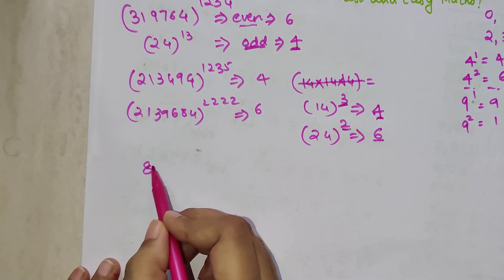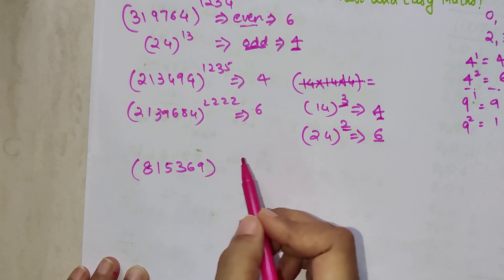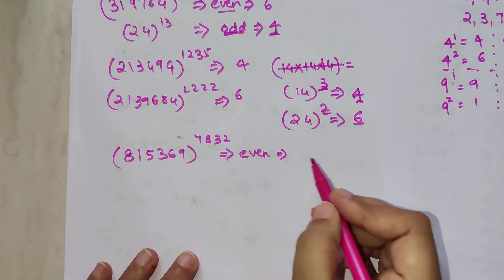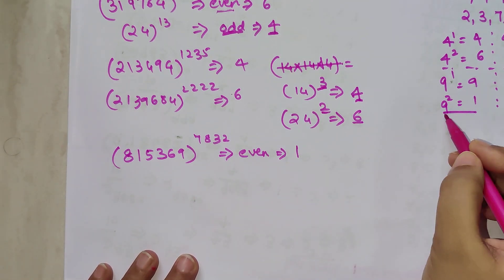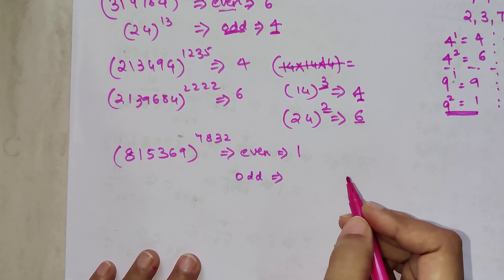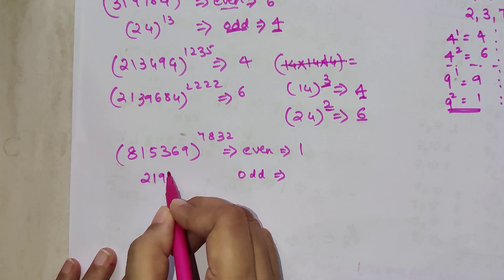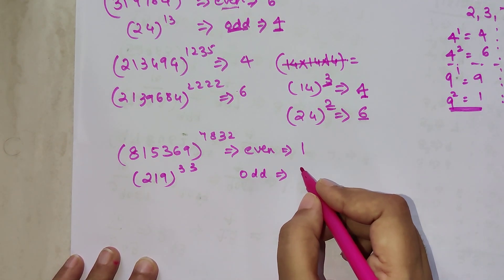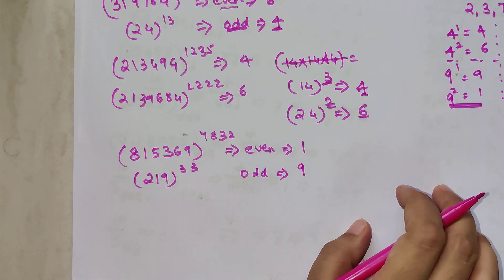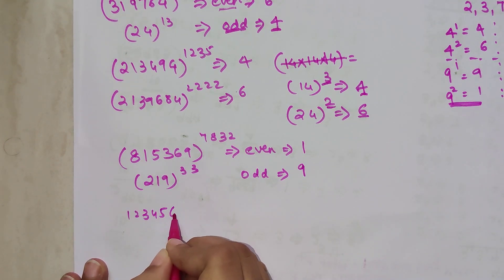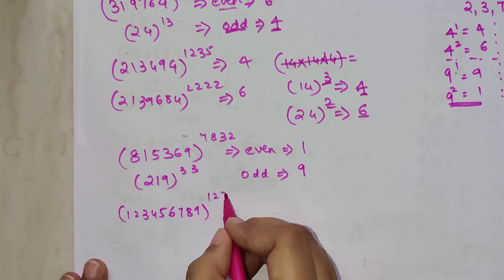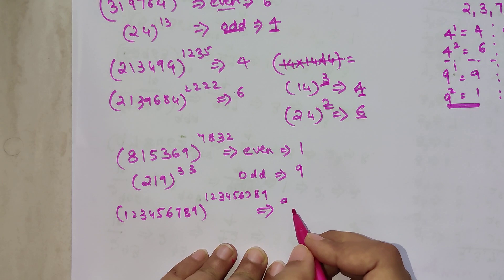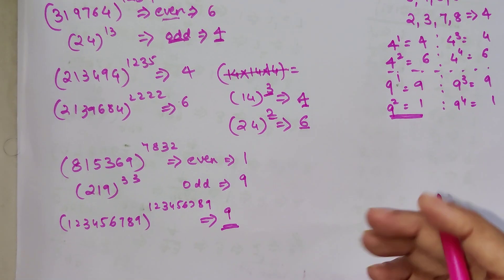Now for numbers ending in 9: the rule is the same structure. If the index is even, the last digit is 1. If the index is odd, the last digit is 9. For example, 219 raised to 33 — 33 is odd, so last digit is 9. And 123456789 raised to 123456789 — 9 is odd, so last digit is 9.